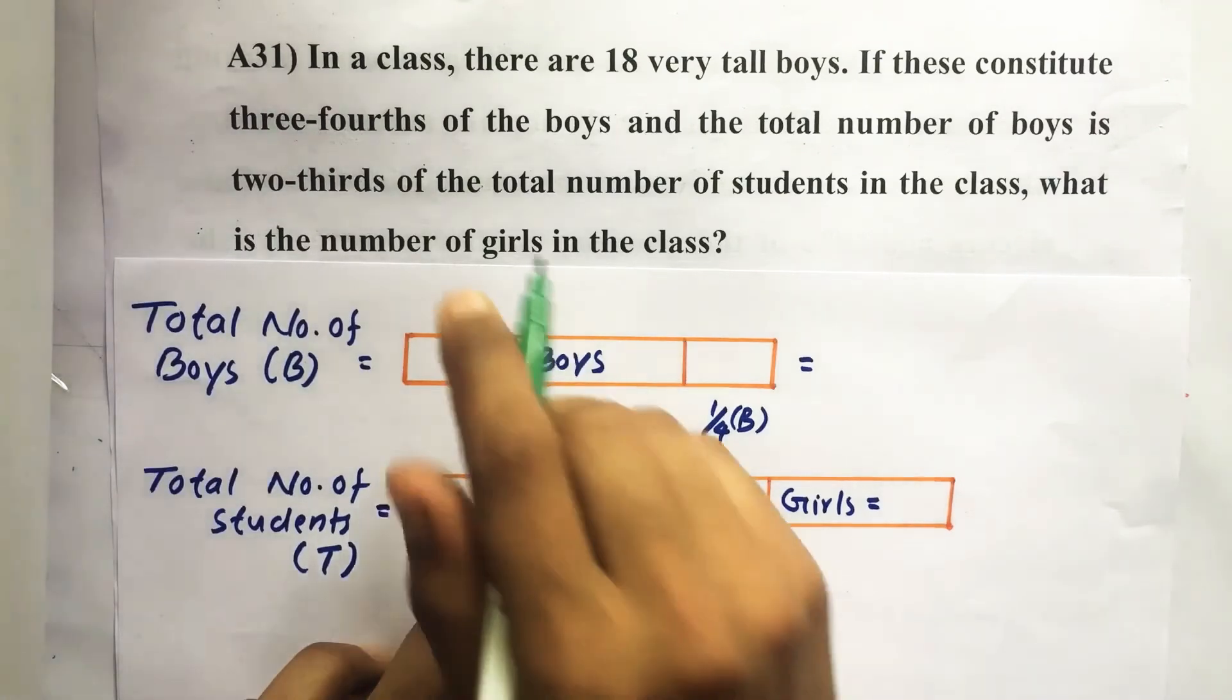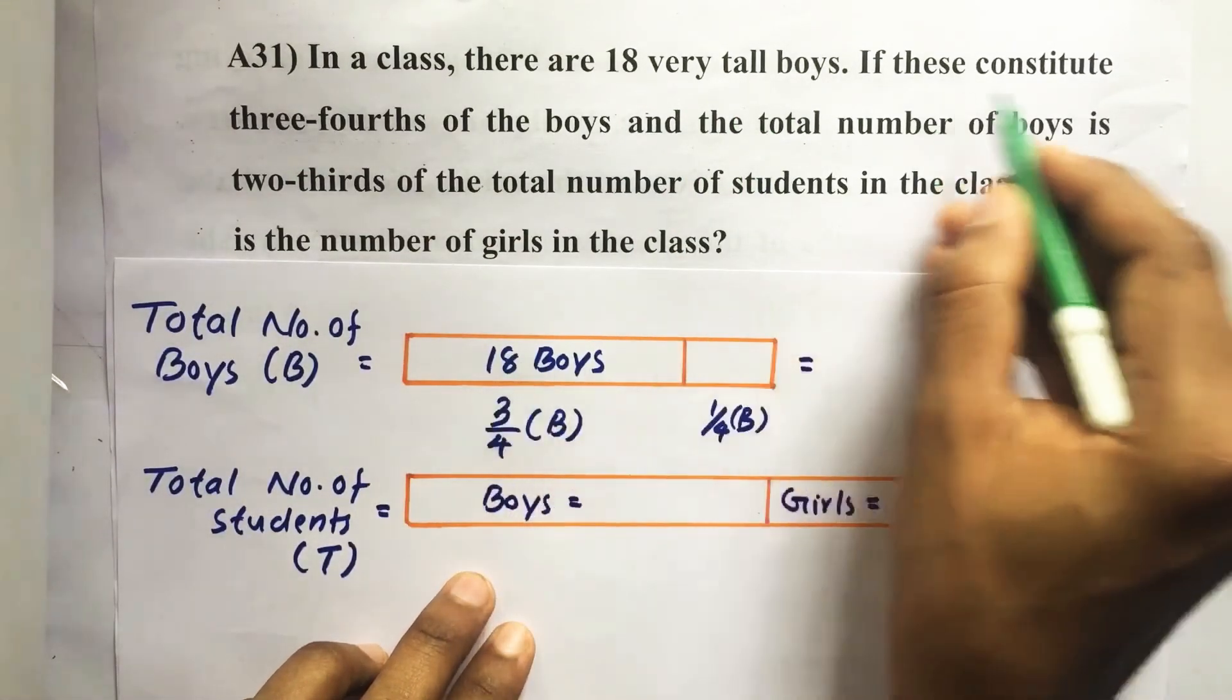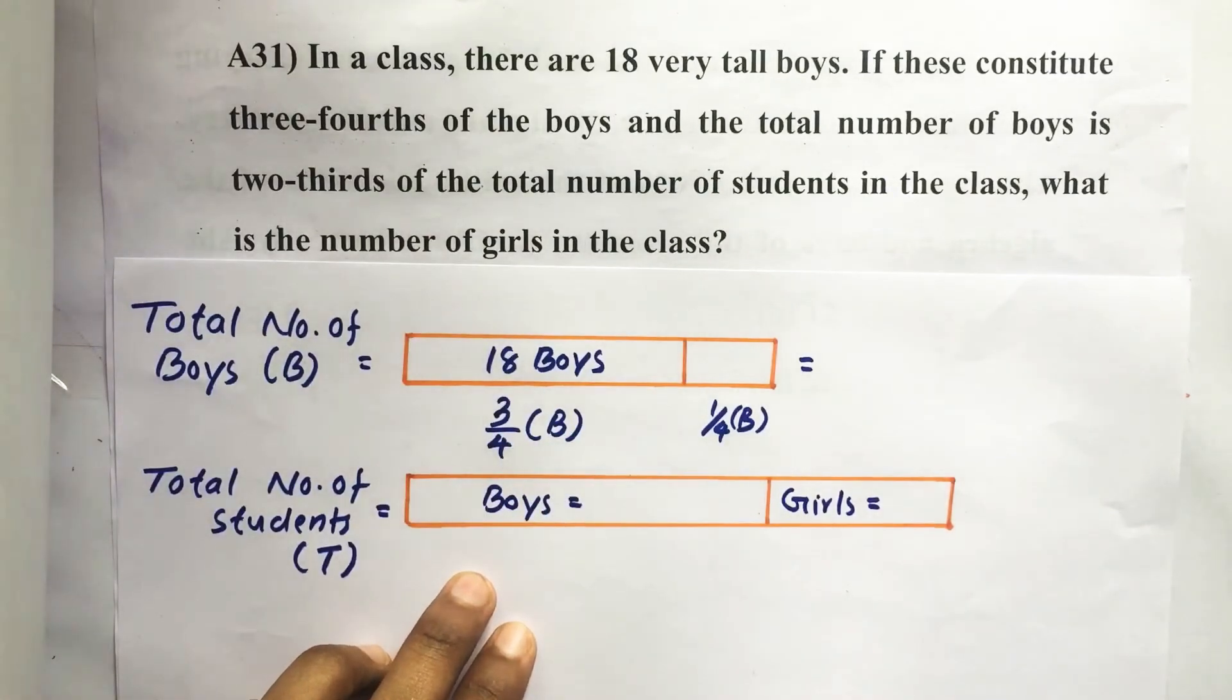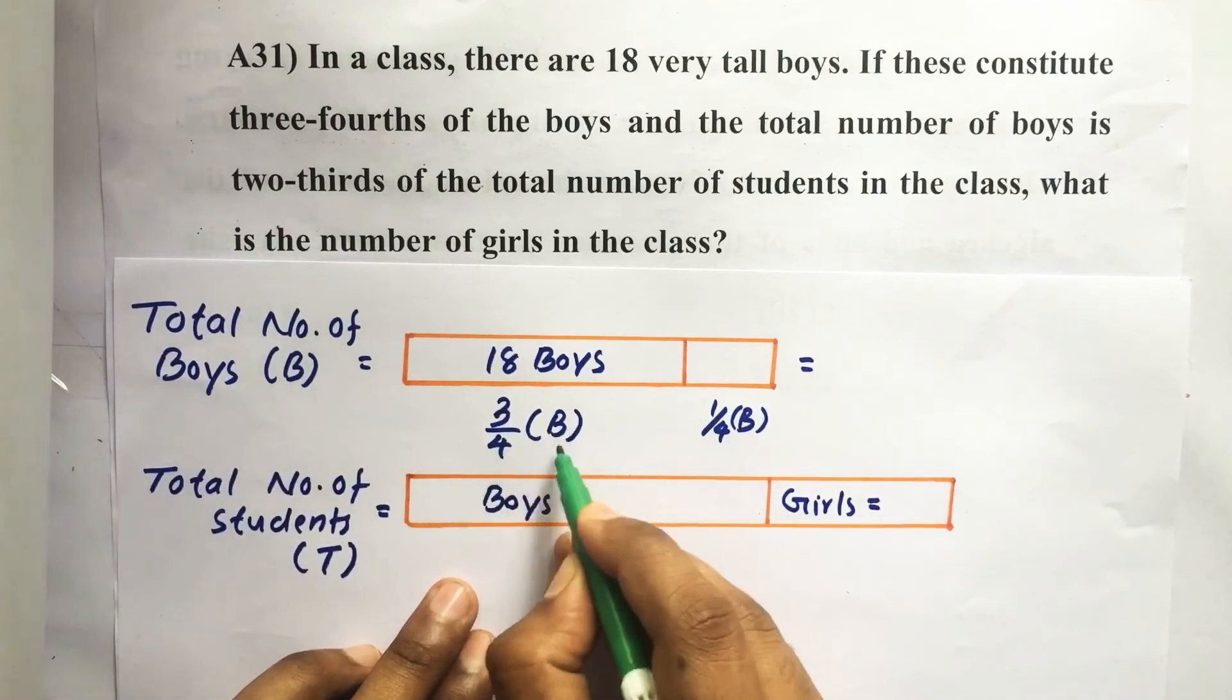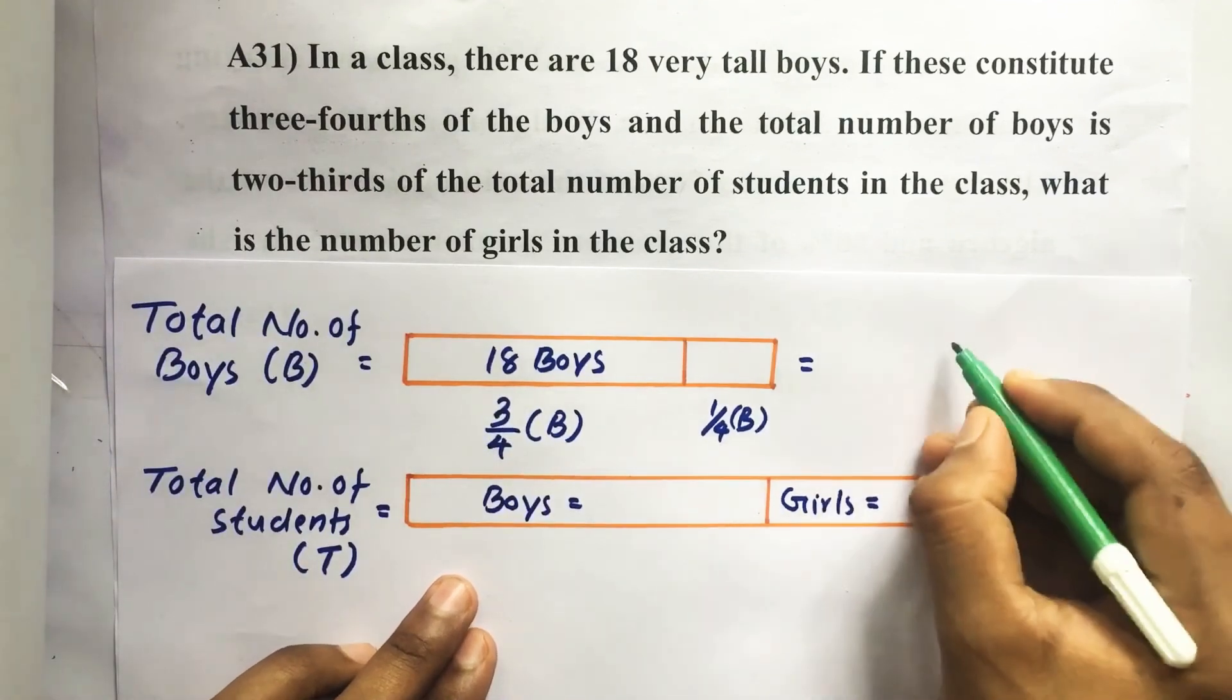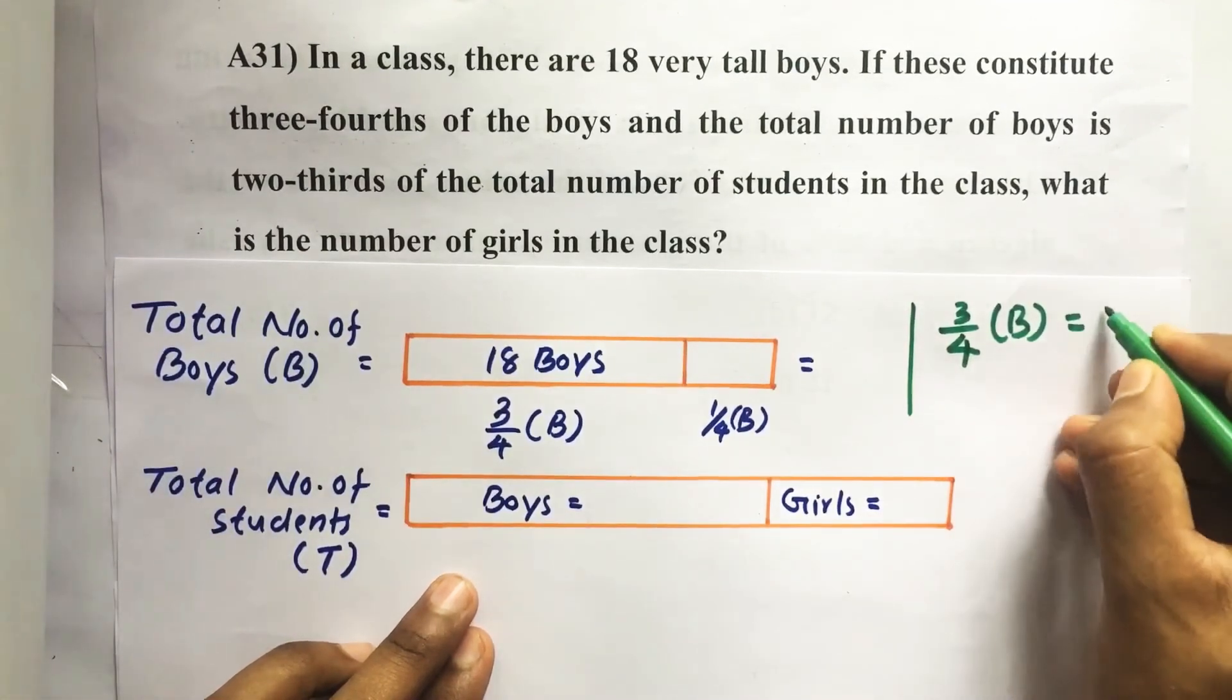So here it is given that in a class there are 18 very tall boys. This 18 very tall boys is three-fourths of the total boys in the class. So if suppose total number of boys equal to B, then three-fourths of this B equal to 18 boys. So here three-fourths of B equal to 18.